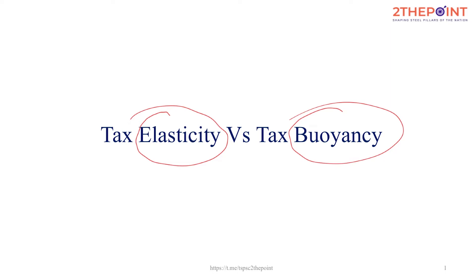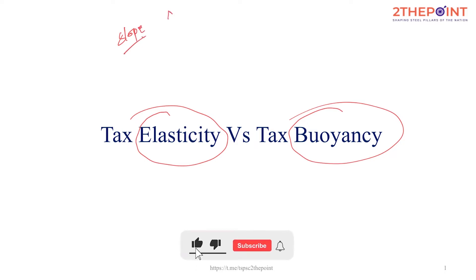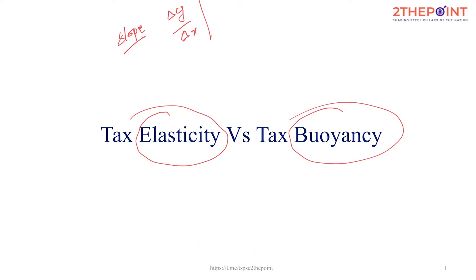Let us keep it simple. Slope is the rate of change in y with the change in x — that is, the change in the dependent variable for a change in the independent variable. So if you want to simplify it: